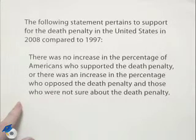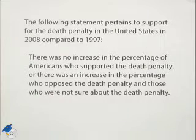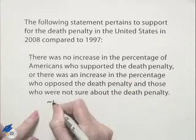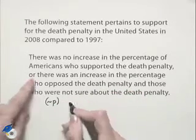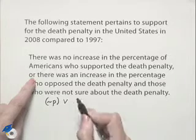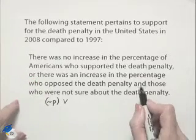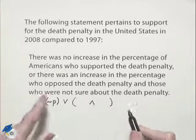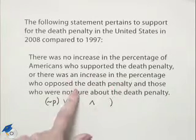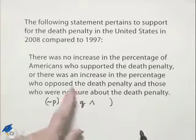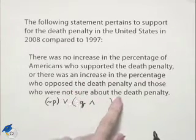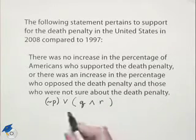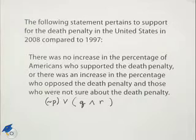Looking back at our problem, we have 'there was no increase in the percentage of Americans who supported' — that would be the negation of P. We have the disjunction 'or', and now we have these two statements joined with 'and', so we have a conjunction in between. There was an increase in the percentage who opposed — that's Q — and there was an increase in those who were unsure — that's R. So this is the symbolic format of that statement.